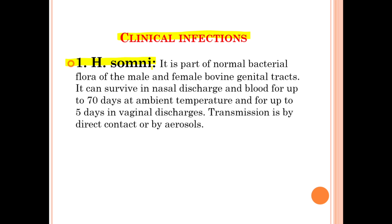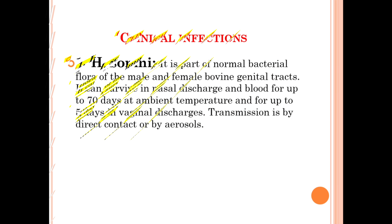Haemophilus somni is part of the normal bacterial flora of the male and female bovine genital tract. It can survive in nasal discharge and blood for up to 70 days at ambient temperature, and for up to five days in vaginal discharge. Transmission occurs by direct contact or by aerosols.